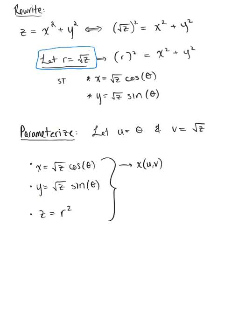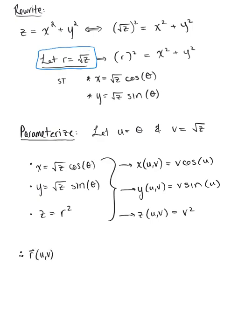Taking these three conversion formulas and parameterizing in terms of u and v: x equals v cosine of u, y equals v sine of u, and z equals v squared. Therefore, the parametric description of this paraboloid is the vector (v cosine of u, v sine of u, v squared).